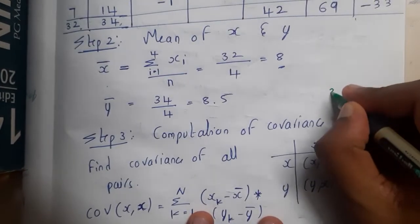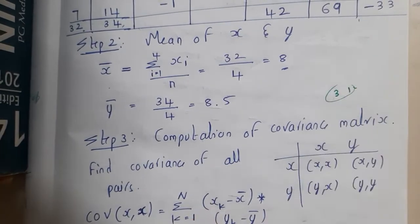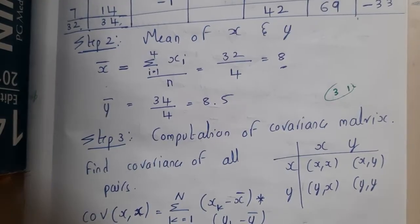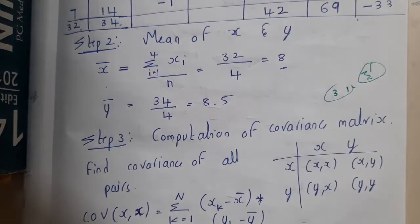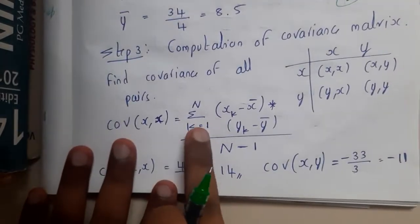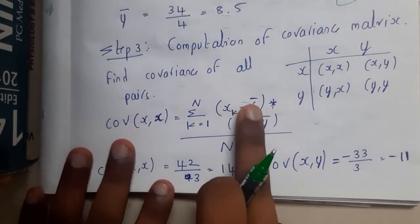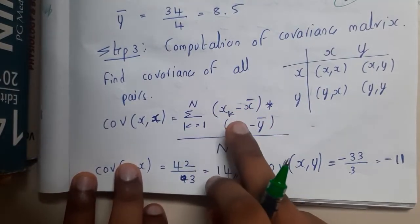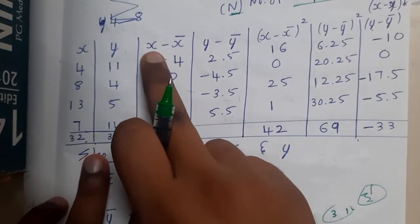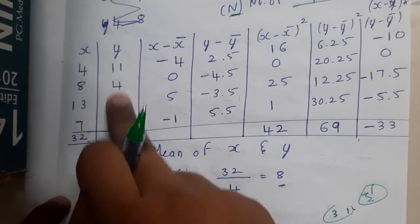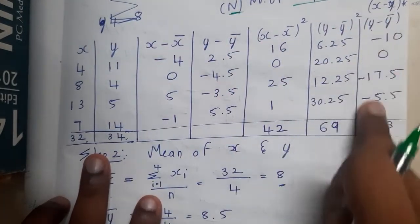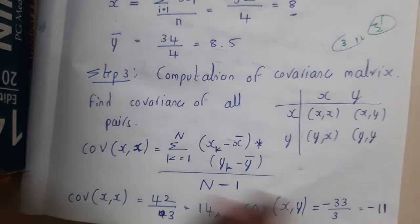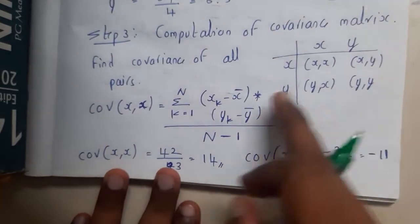If you recall from the third unit, the first two topics discussed covariance and related concepts. The covariance formula looks like: summation of (X minus X-bar) into (Y minus Y-bar). So I calculated X minus X-bar for all values and Y minus Y-bar for all values, squared them, and multiplied them with each other.